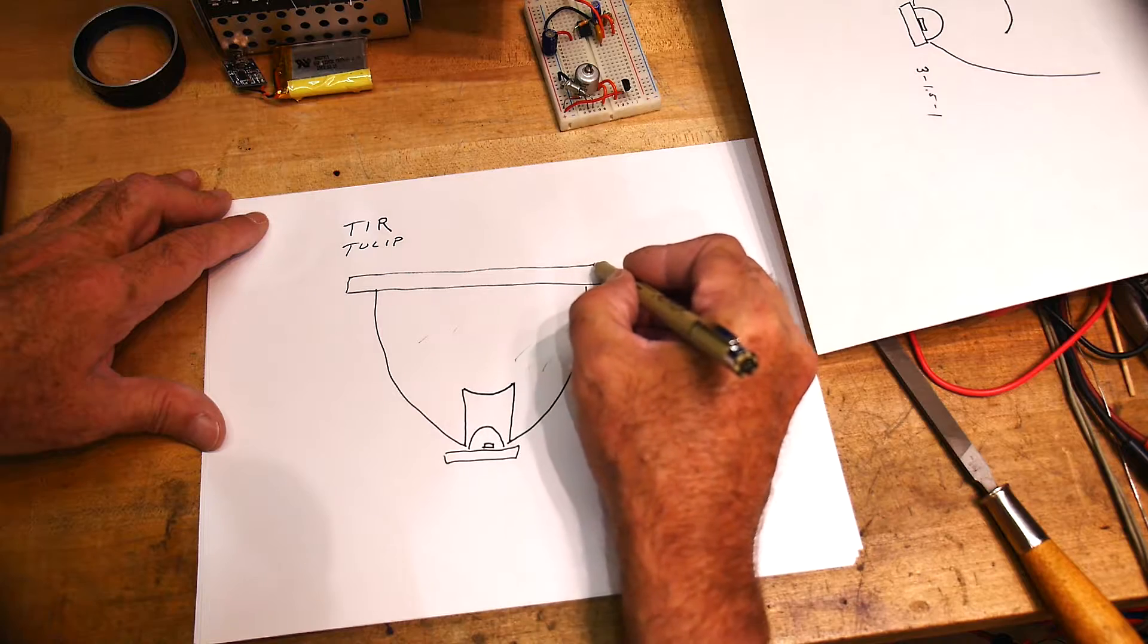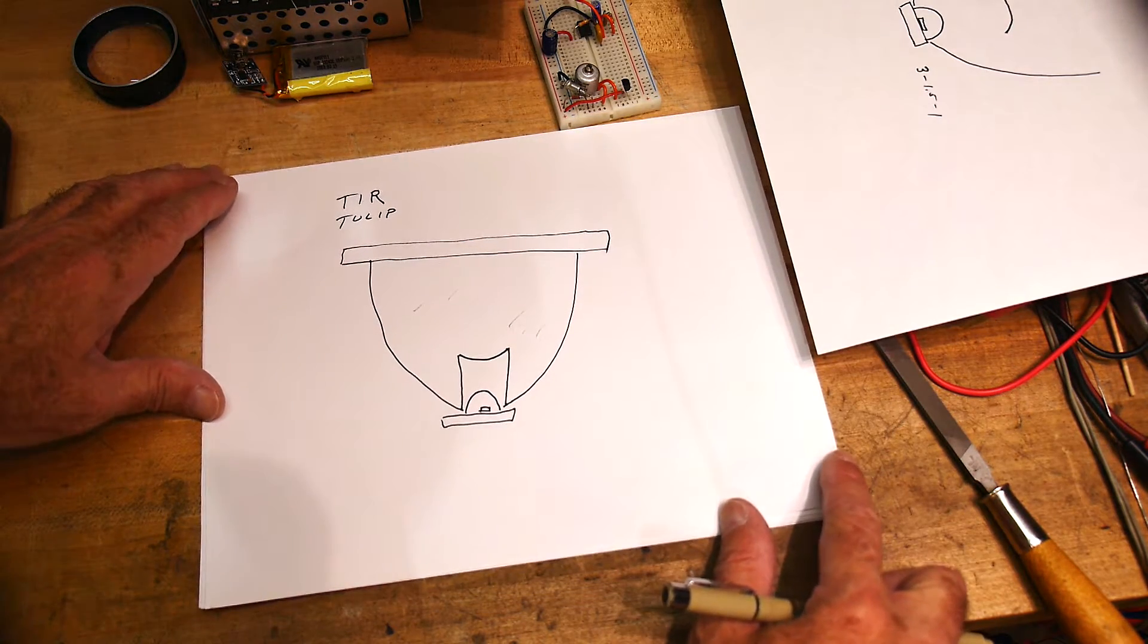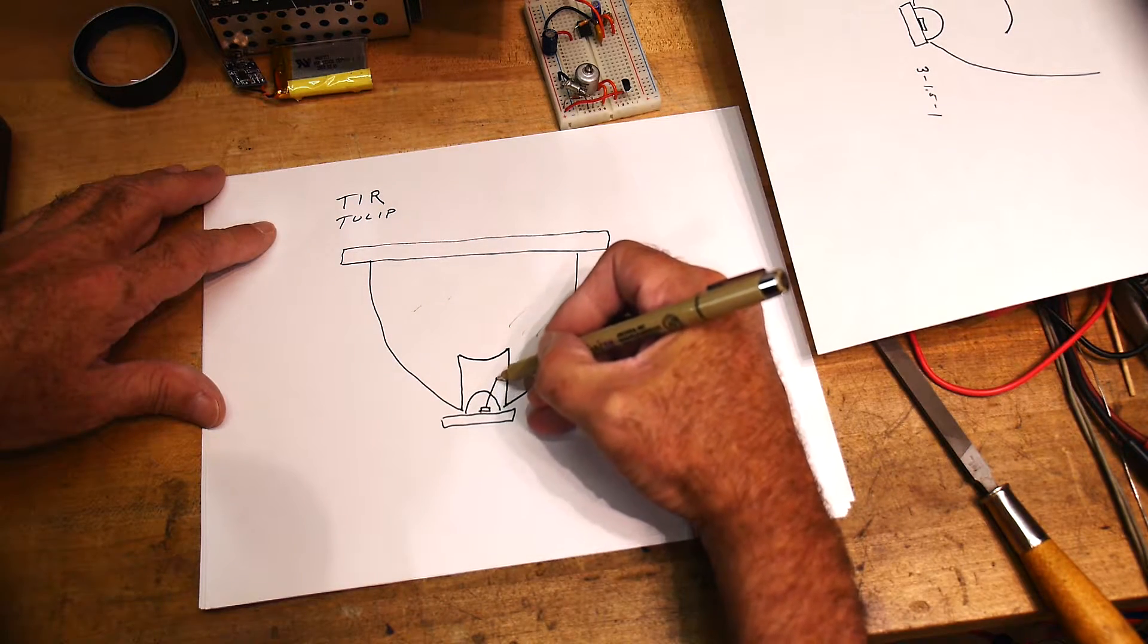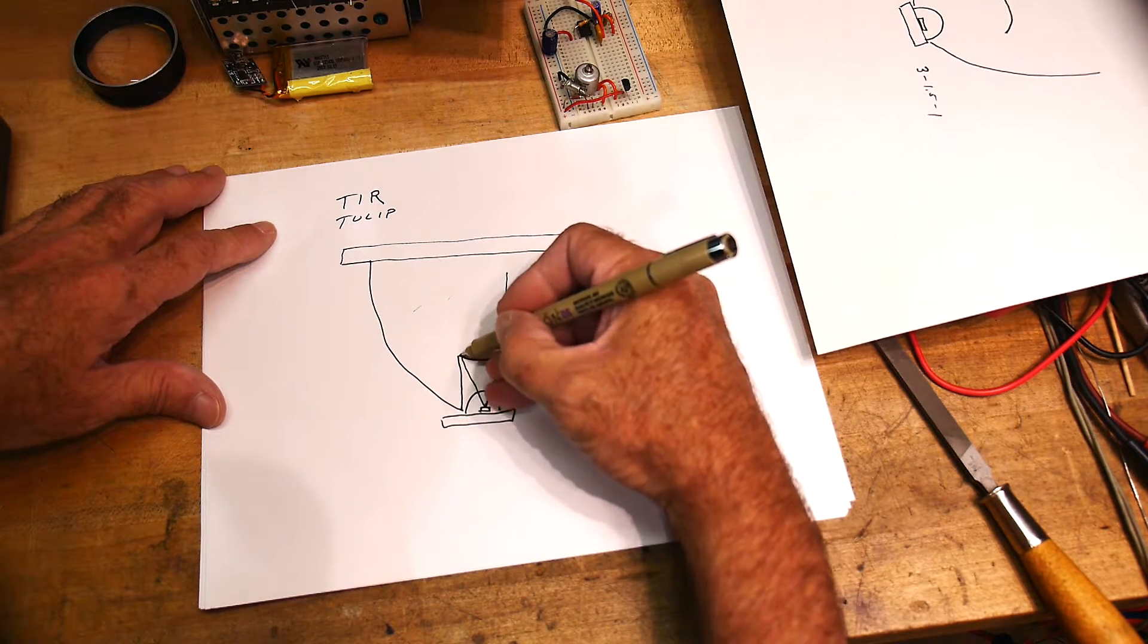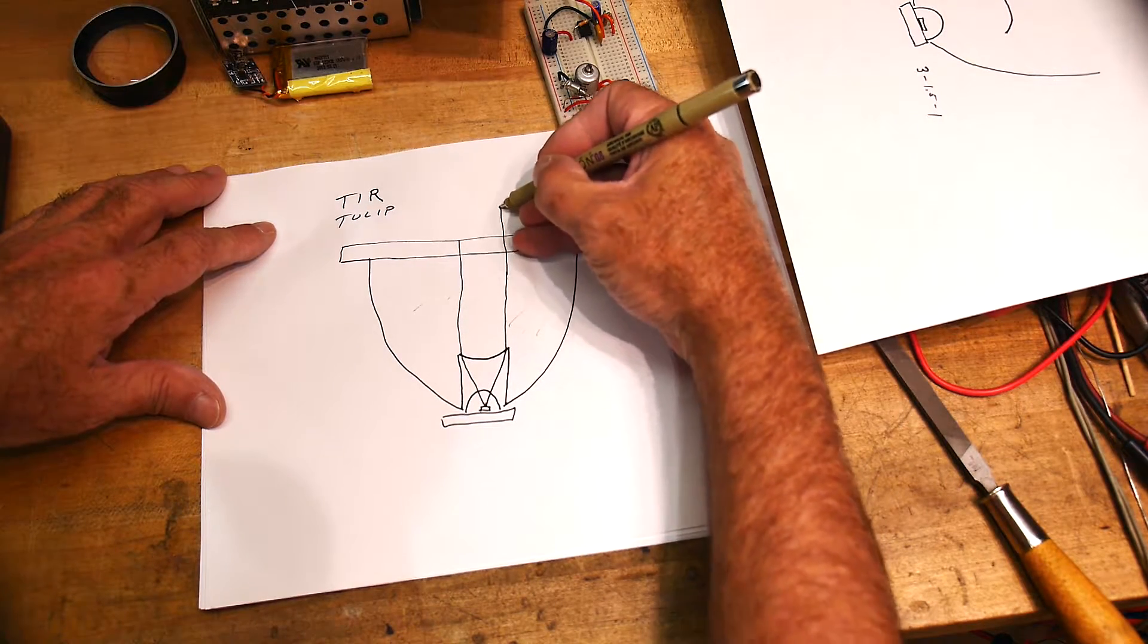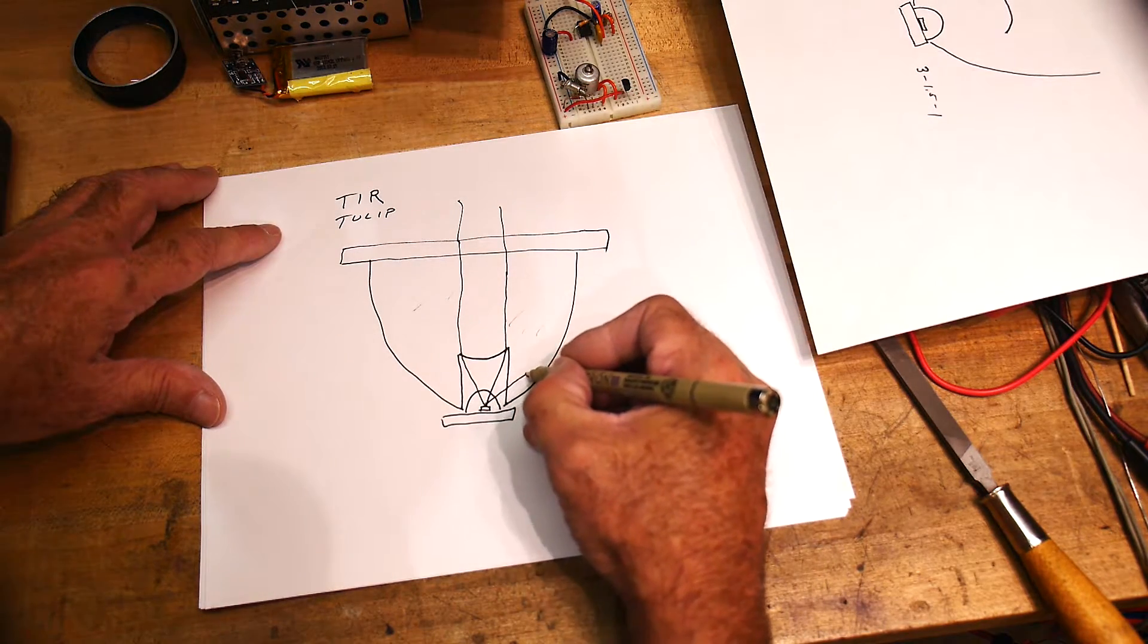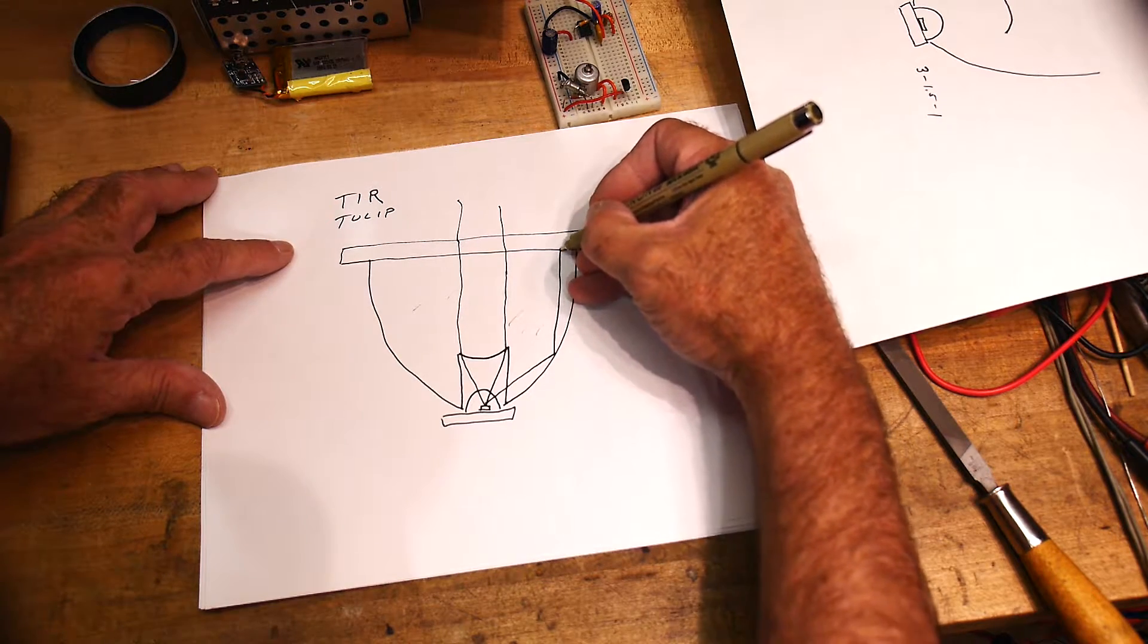So what happens here? Well, the middle rays, they're gonna come up and they're gonna see this here, and they're gonna bend and they're gonna come straight out. And then these side rays are gonna hit the side and they're gonna bend and they're gonna come out.